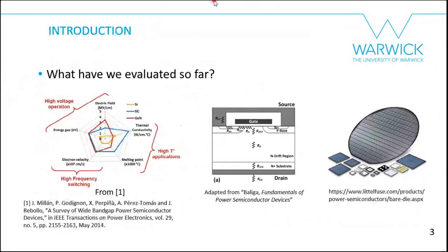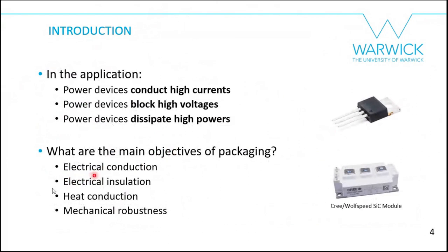We know that silicon carbide is a brilliant material — it enables high-voltage devices that can switch at higher frequencies and operate at high temperature. We manufacture devices using silicon carbide, define the structure, understand what happens with the gate oxide, the parasitics, channel resistances, role of the gate voltage, and reliability from the device perspective. Now we fabricate our device and we have to package it to use it in the application.